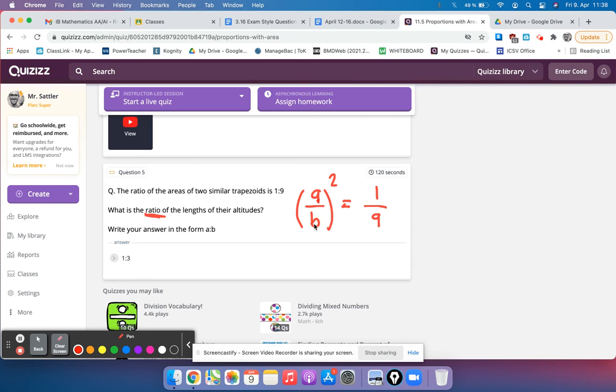So if we set this up to solve, to find the ratio of their altitudes, let's say altitude 1 and altitude 2, then we just square root both sides, and the square root of 1 is 1, and the square root of 9 is 3. So the ratio of those altitudes must be 1 to 3.